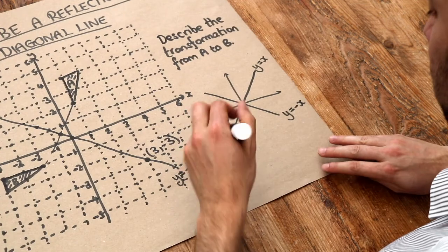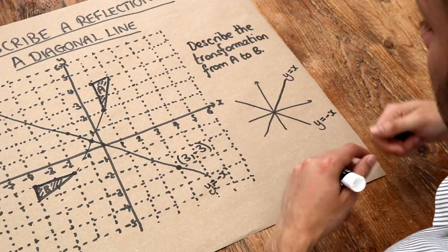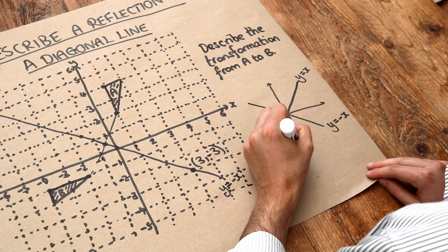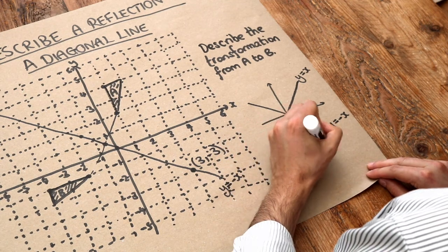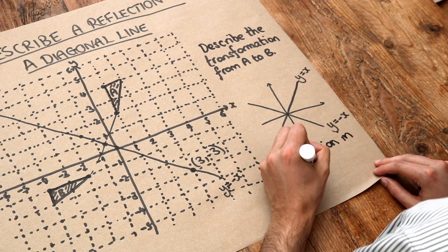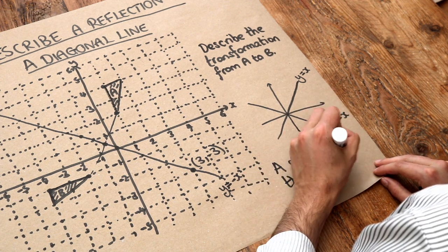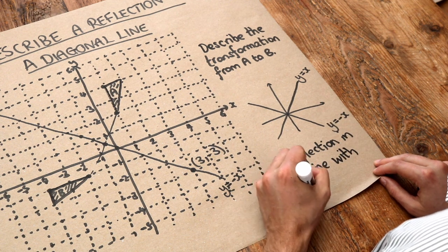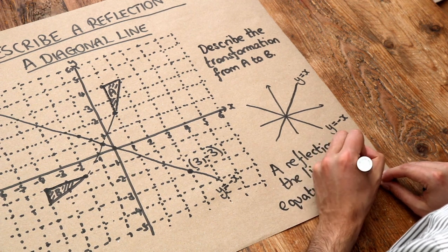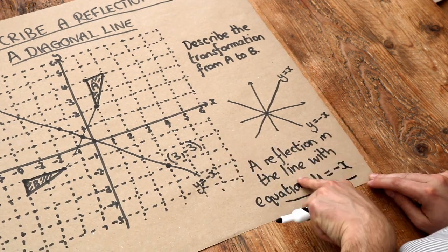So now we just need to describe it. You get the first mark in an exam for saying what kind of transformation it is. So we say it's a reflection, one mark for that. And then you say in the line with equation, and then you give that equation, which we said was Y is equal to minus X. So that is the answer.